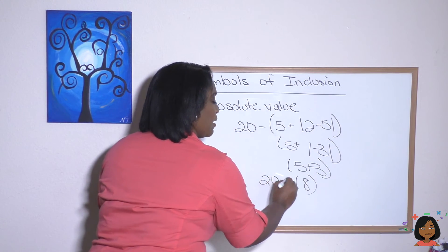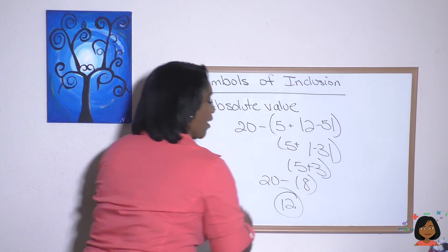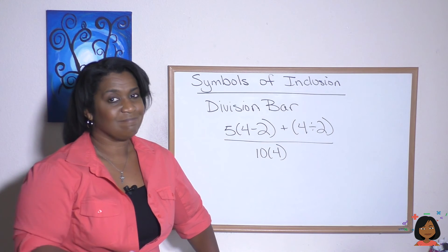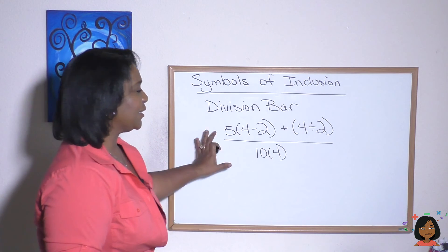Let's try this example: we have a division bar, and what you need to know here is that the division bar is the last thing we'll deal with. So let's use some of the concepts that we know.